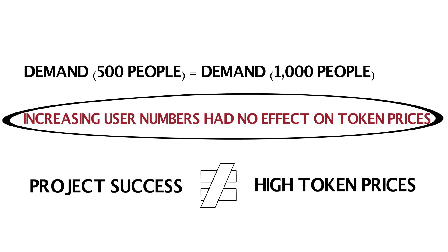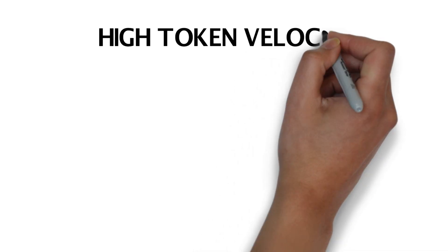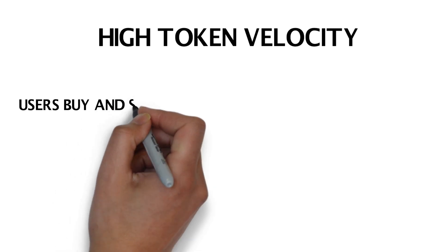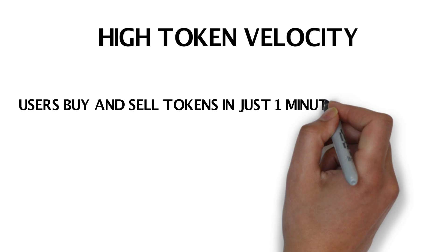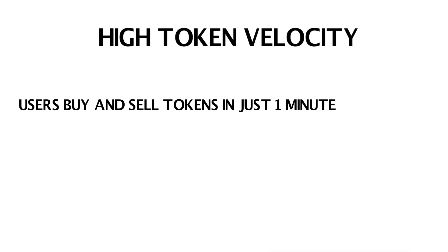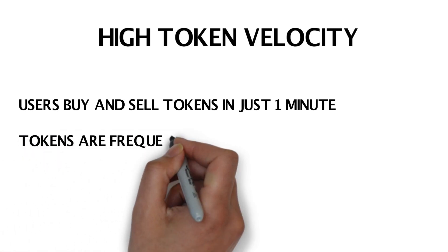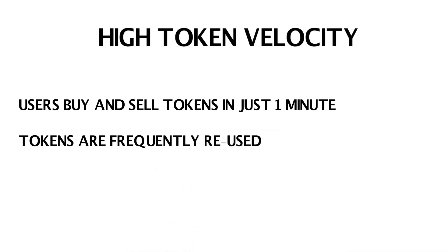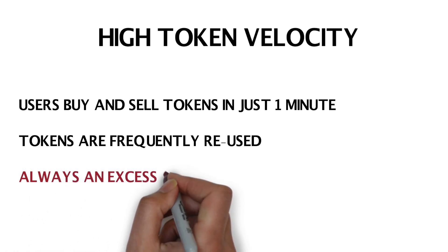So why did this occur? It's because Carfair tokens suffer from high token velocity. On Carfair, in just one minute, users can buy tokens, send them to the driver, and the driver will cash them out. As soon as these tokens are back in the application, they are ready to be used by the next person. Therefore, even if there is greater demand, as there was in our second example, there will always be an excess supply.